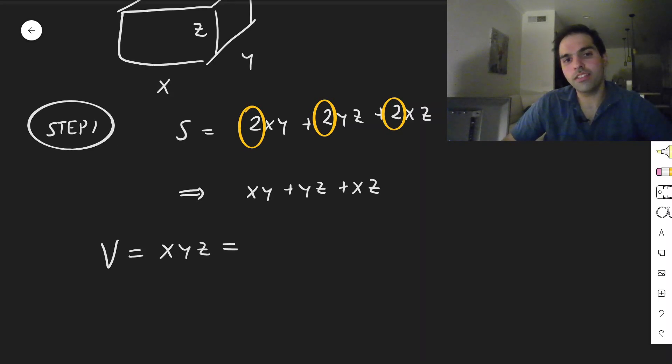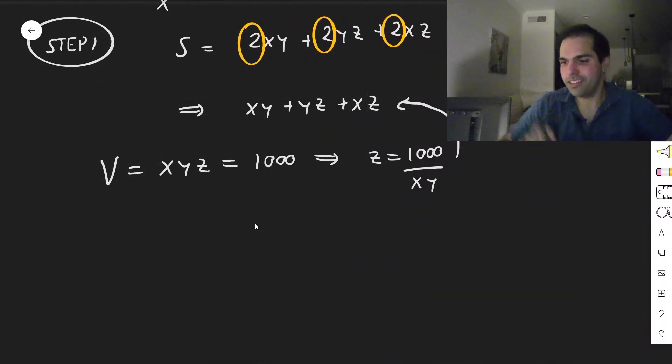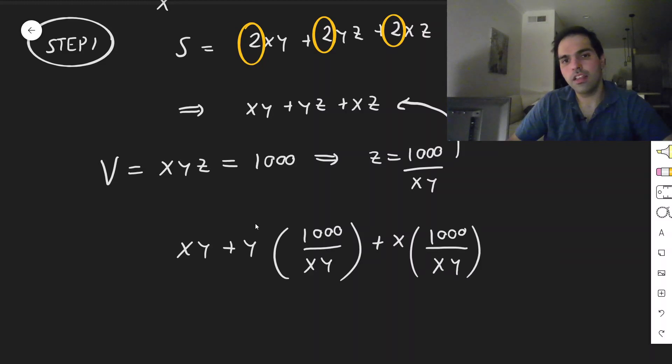So the volume of a box is xyz, which is a thousand. So assuming nothing is zero, because a very thin box wouldn't be helpful, we basically get that z equals a thousand over xy. And the nice thing is this new piece of info, you can now plug this into the surface area to get xy plus y times a thousand over xy plus x times a thousand over xy.